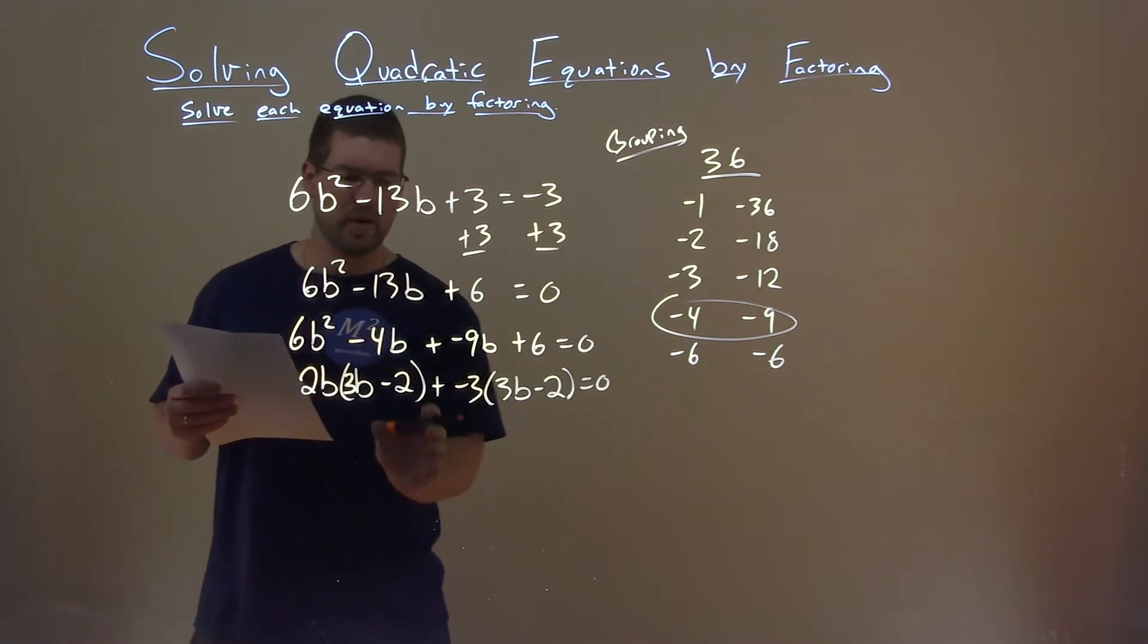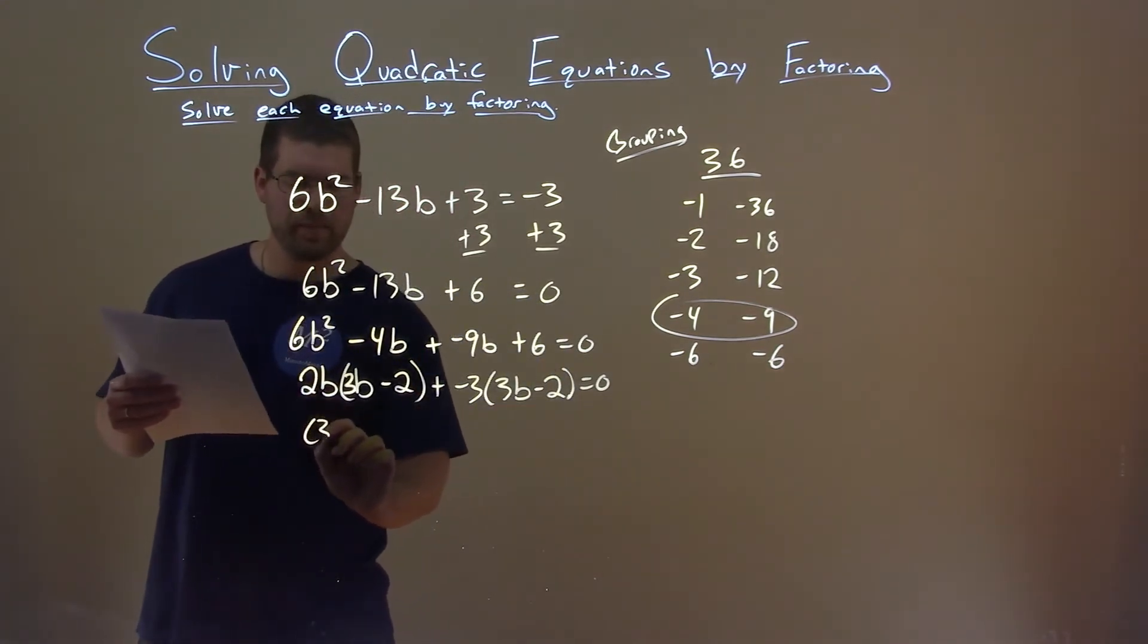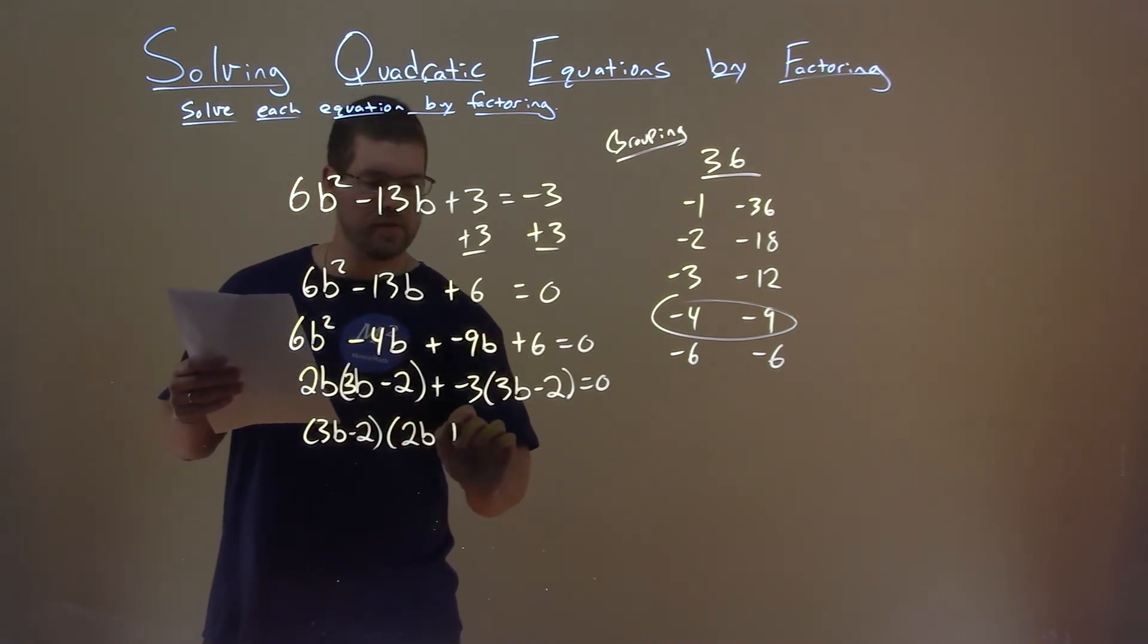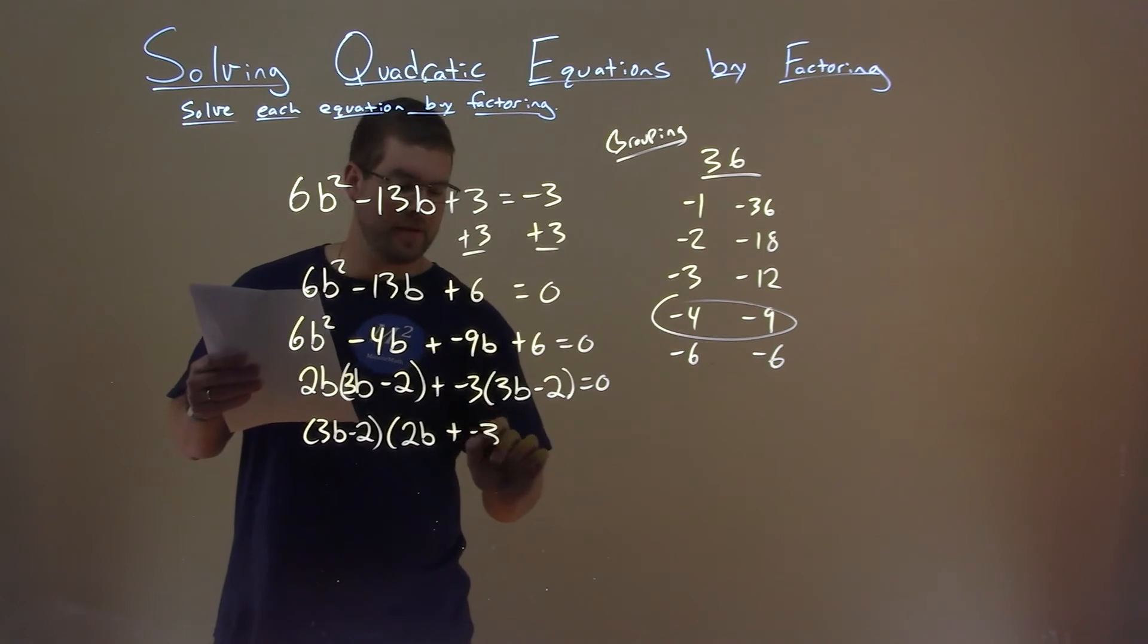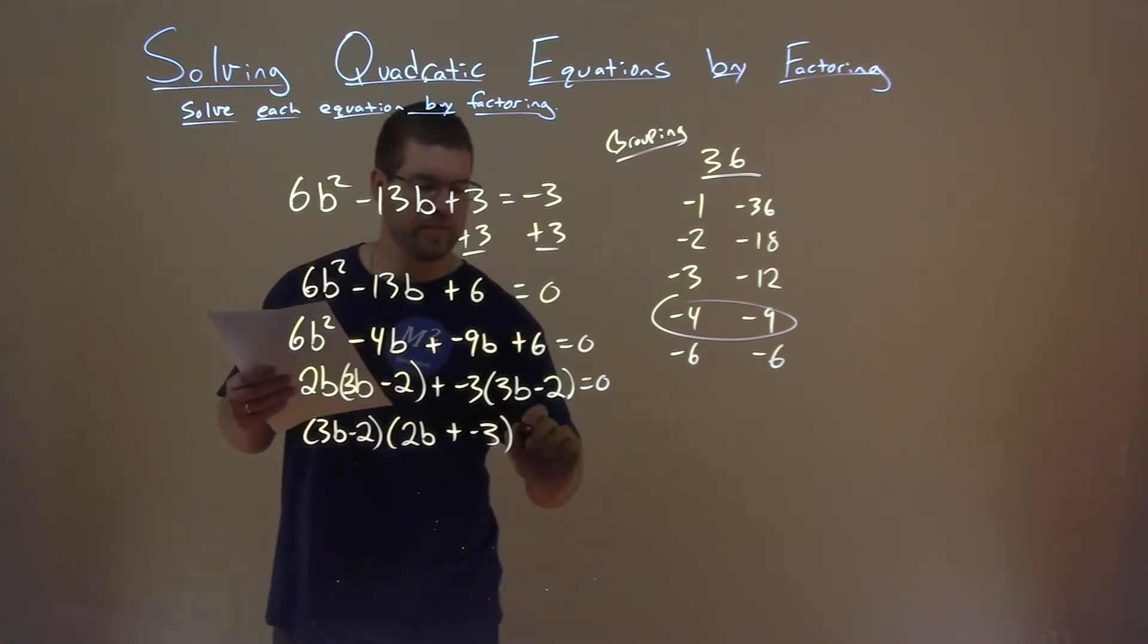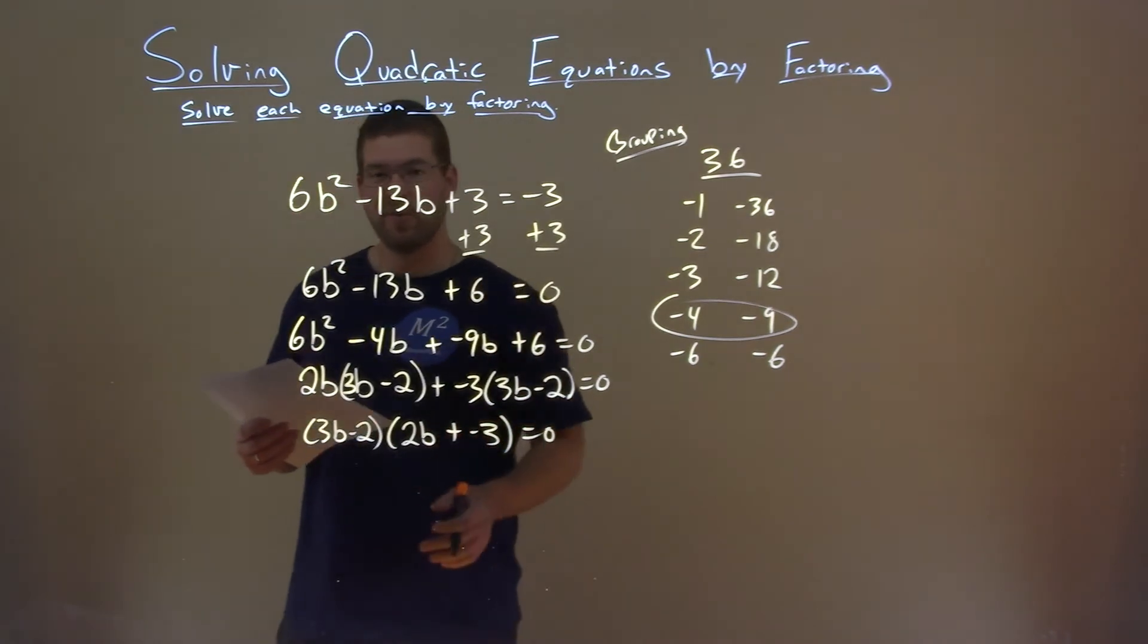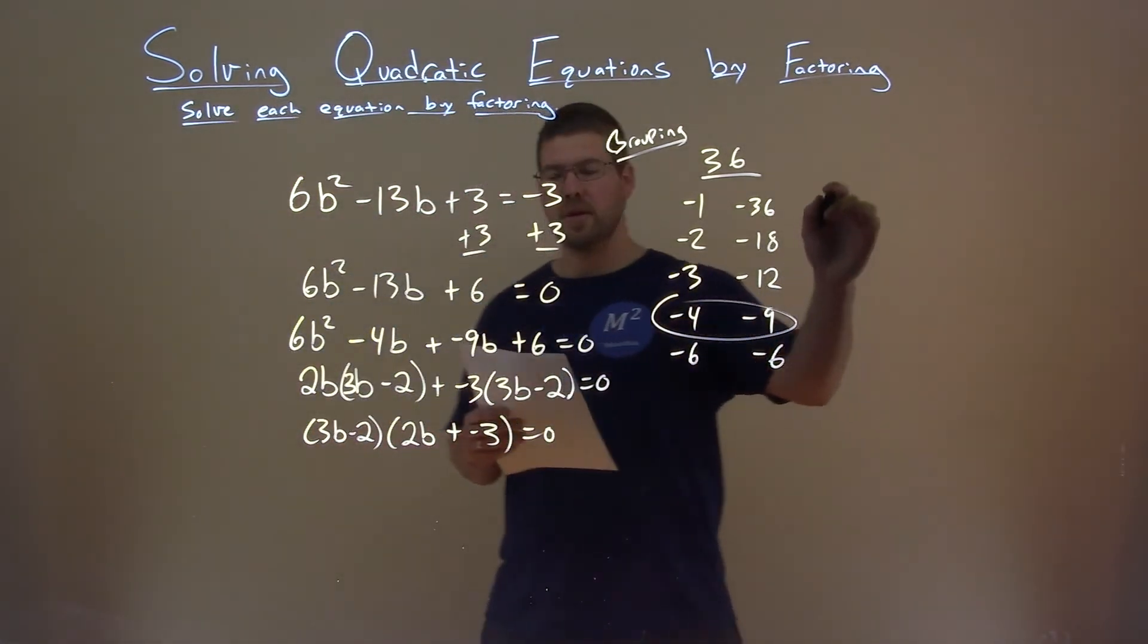Well, notice now we have 3b minus 2 and 3b minus 2 here. We can pull both of those out, and then we're left with 2b plus a negative 3 equals 0. So, now we have it in factored form, we can now solve for our variable. We're going to set both parts equal to 0.